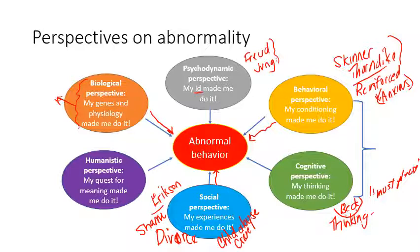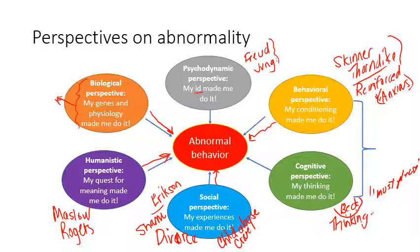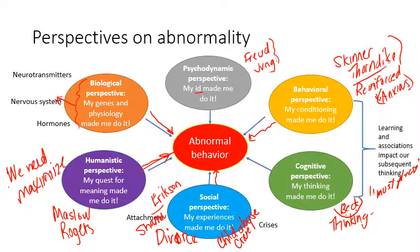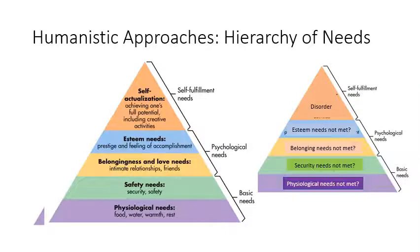The humanistic perspective says 'my quest for meaning made me do it.' Maslow and Rogers — considered humanists — would say every organism wants to maximize its potential. In that quest to maximize, maybe we've gone too far. The humanistic perspective offers that we have needs that must be met: our basic needs of food, water, warmth, and rest. Were those needs met when we were young, and if not, what did we learn?